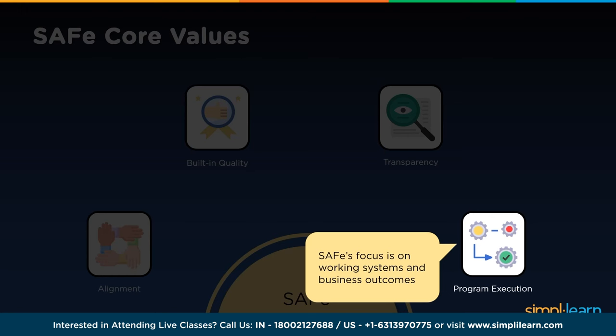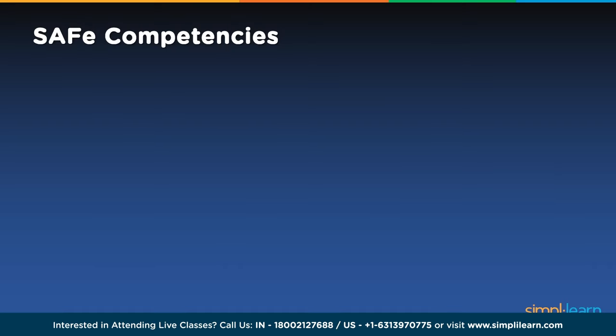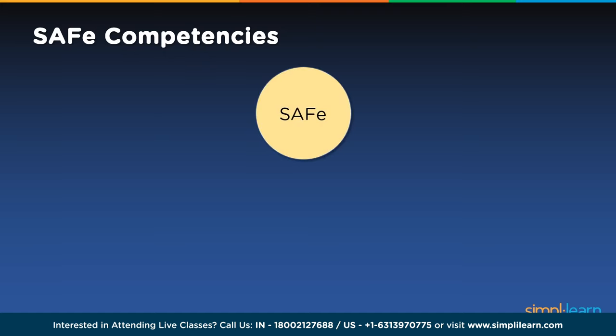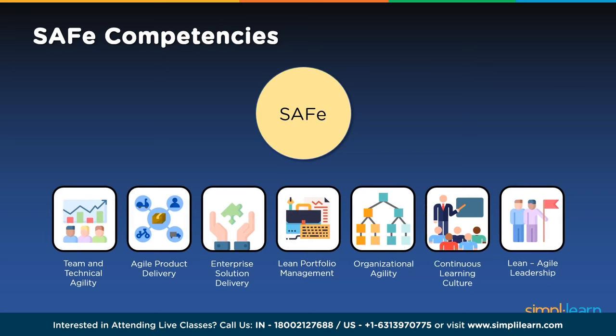SAFe's seven competencies are: team and technical agility, agile product delivery, enterprise solution delivery, lean portfolio management, organizational agility, continuous learning culture, and lean-agile leadership. Team and technical agility means agile teams are high-performing and cross-functional, building business solutions with high-quality output, requiring teams that understand and follow agile frameworks and are technically sound.